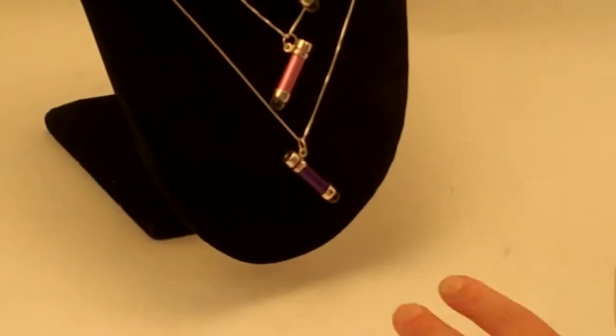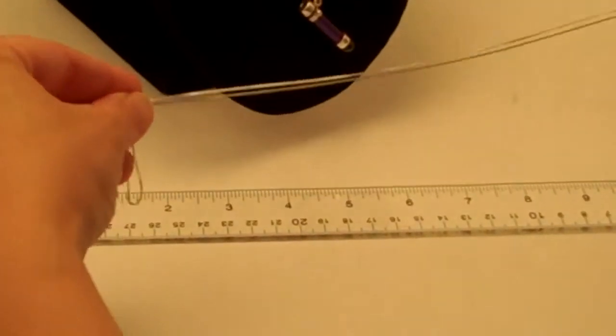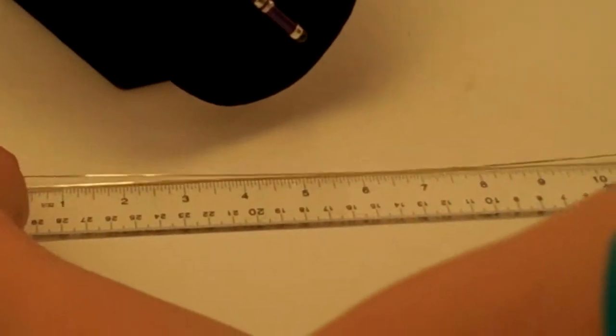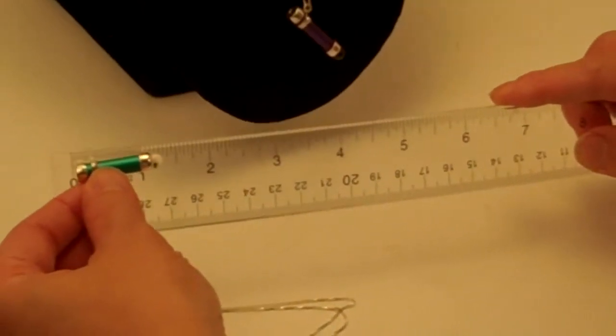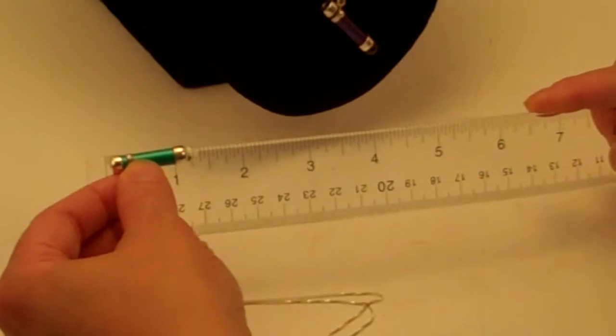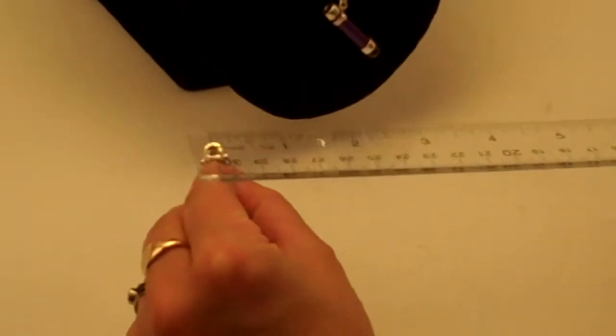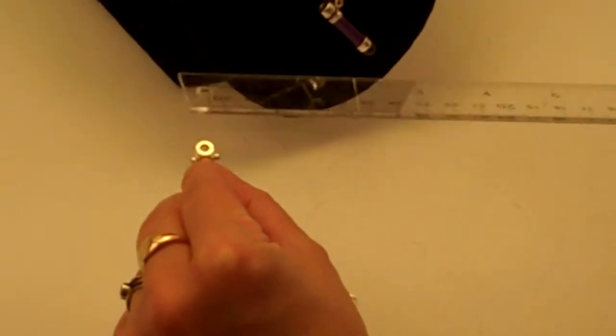Now the chain itself is a 24 inch length and the tellidoscope itself has an inch and a quarter for total length and a diameter of a quarter of an inch.